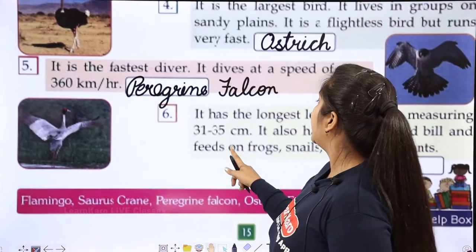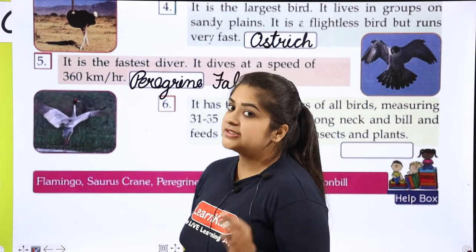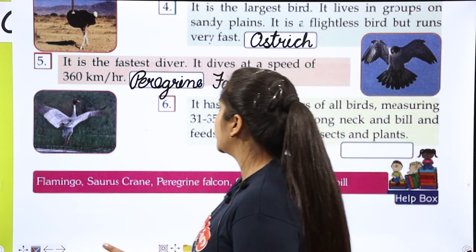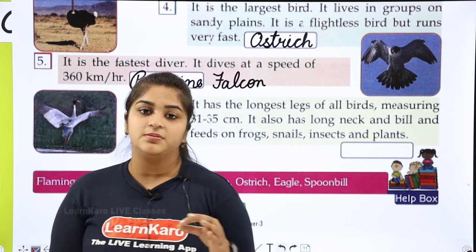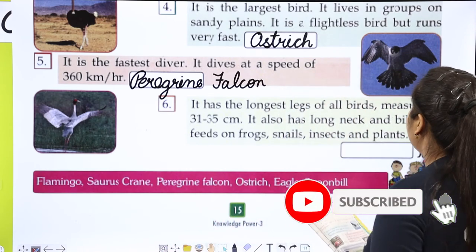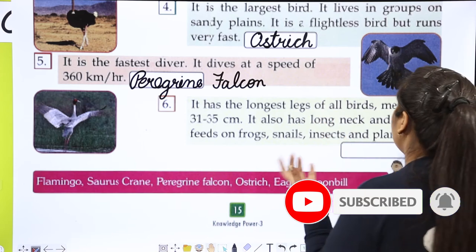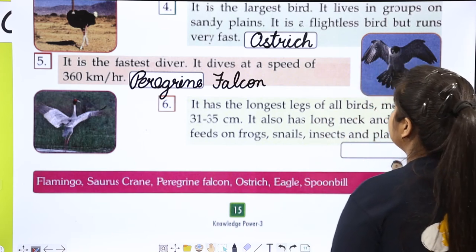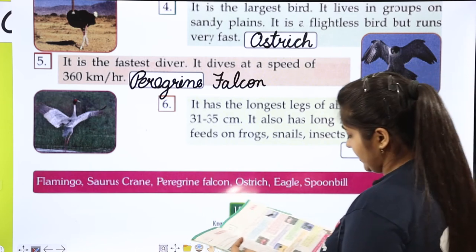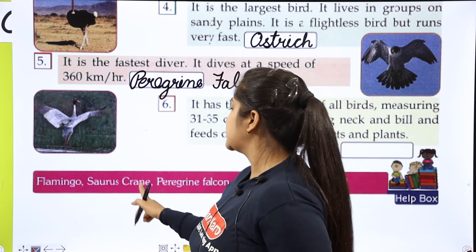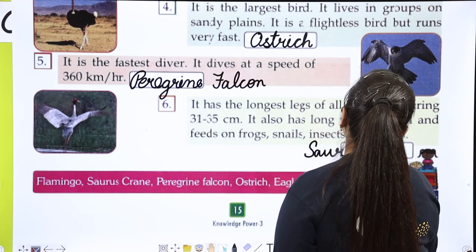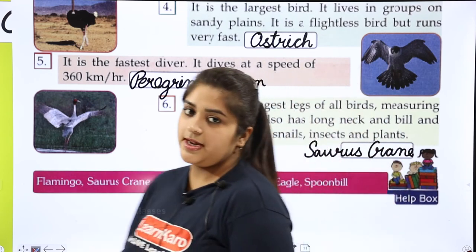Next. It has the longest legs of all birds, and feeds on frogs, snails, insects and plants. And the name of the bird is Saurus crane — spelled S-A-U-R-U-S, Saurus, C-R-A-N-E, crane.